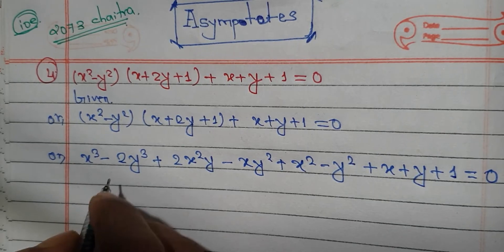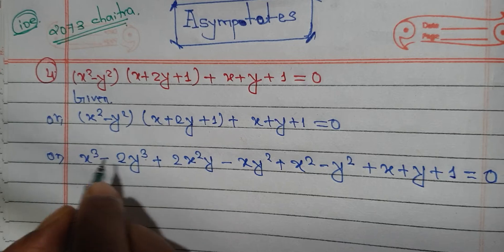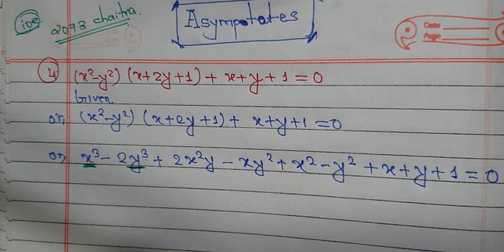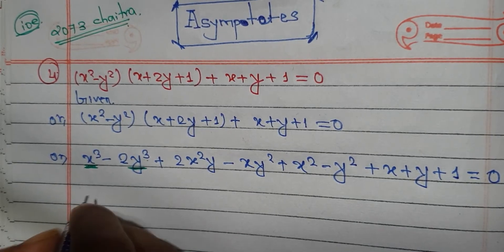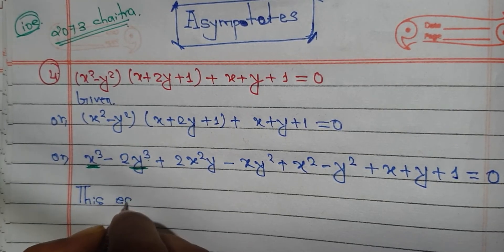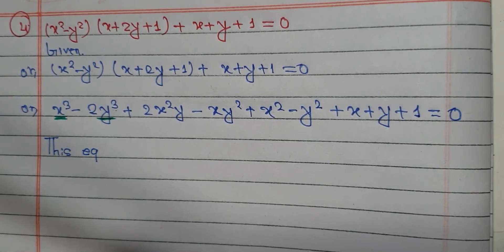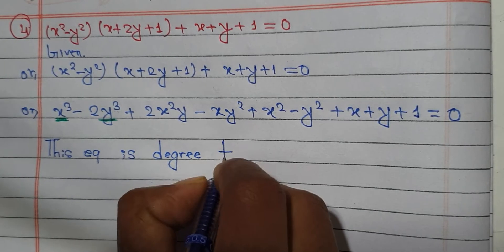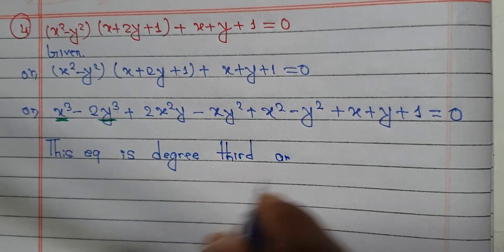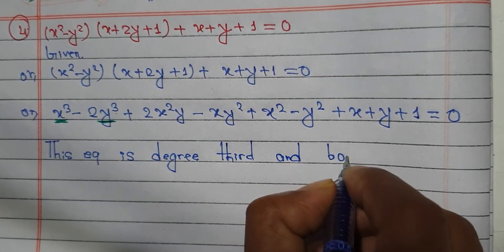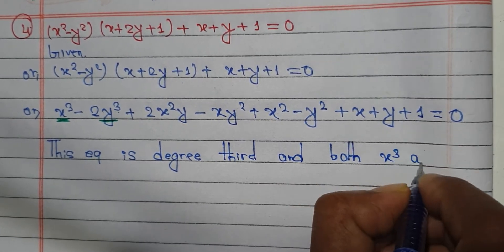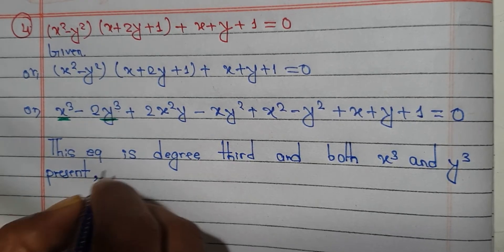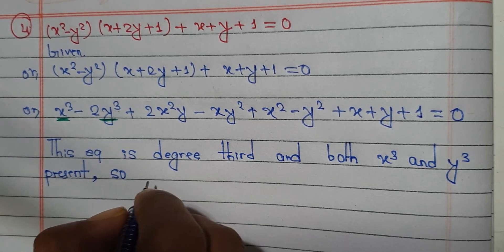This is a higher degree equation. The highest power — x cube and y cube — are present, so the degree is third. Both x cube and y cube are absent, so we proceed.